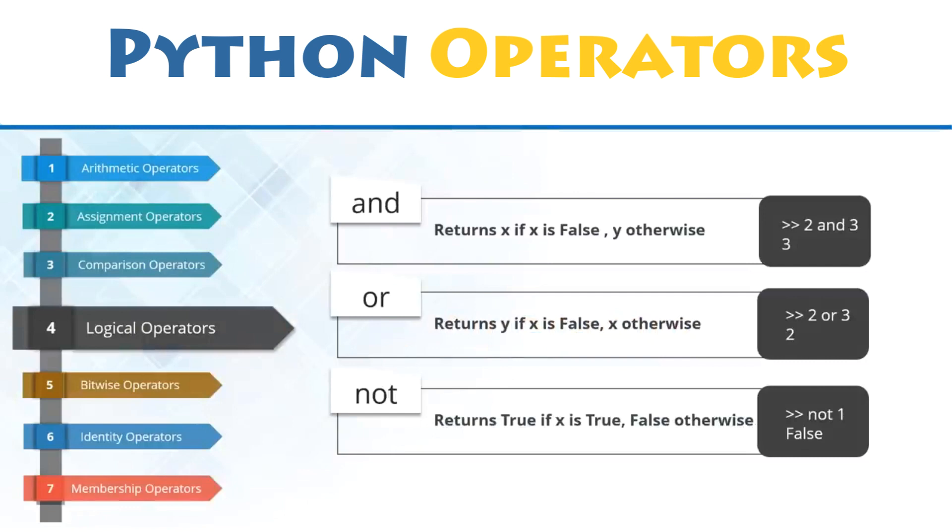Finally, the not operator will only give true if the boolean expression as the operand is false.